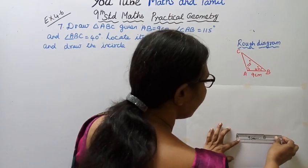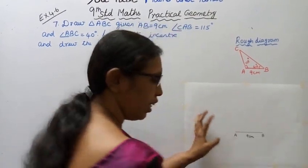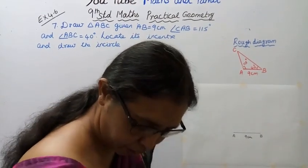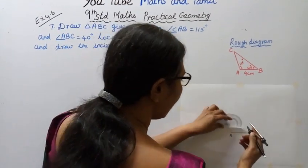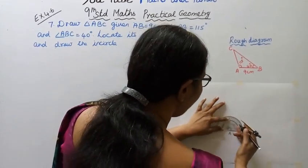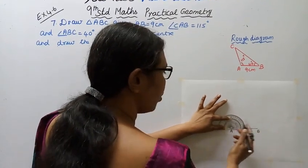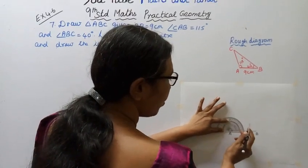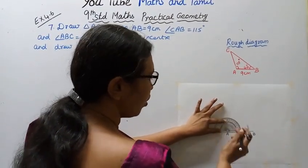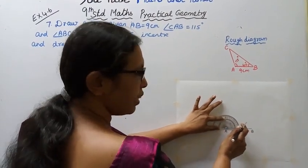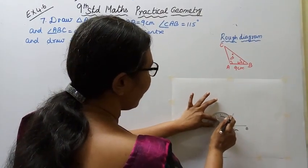Draw the line AB equal to 9 centimeters. Draw the line and set up a new angle. Angle A is 115 degrees — this is the obtuse angle. Set the compass to zero at point A, and mark 115 degrees.